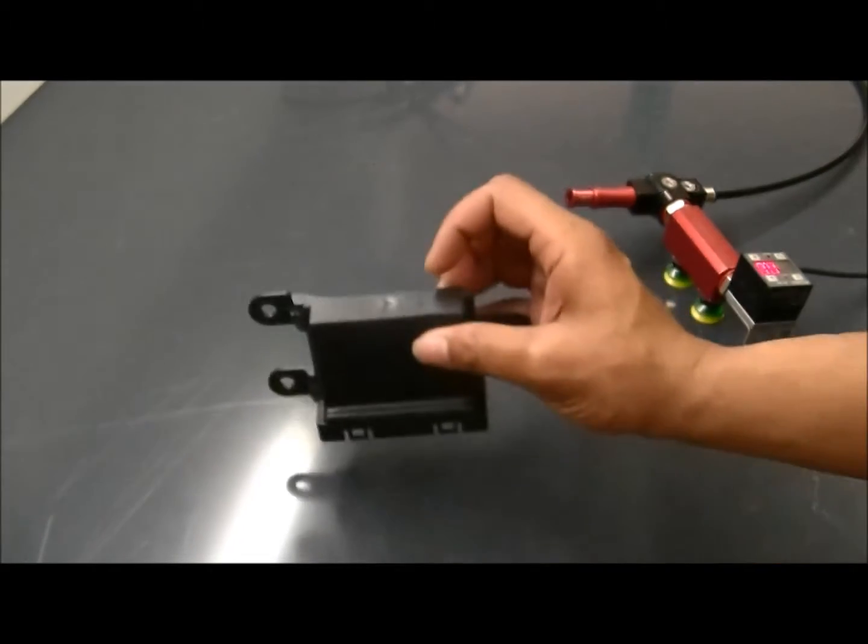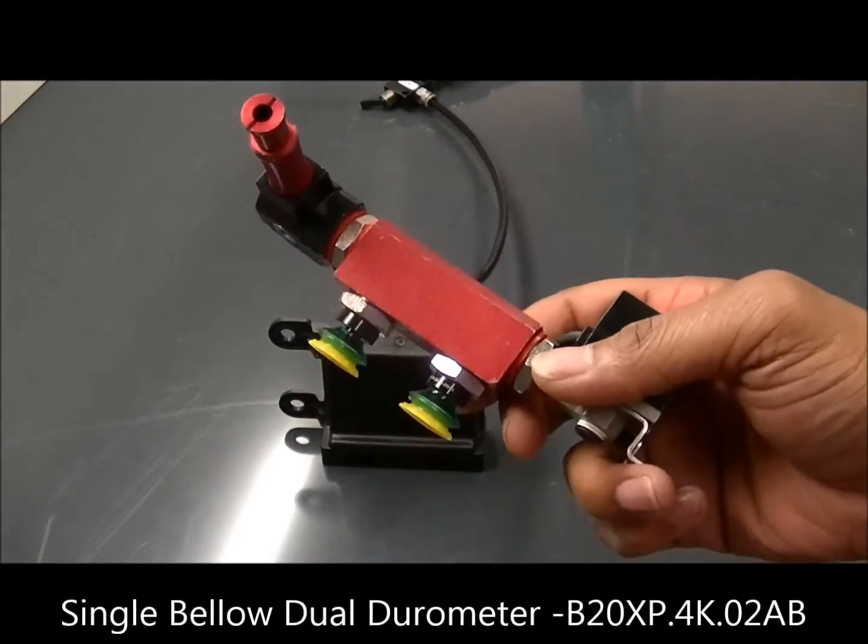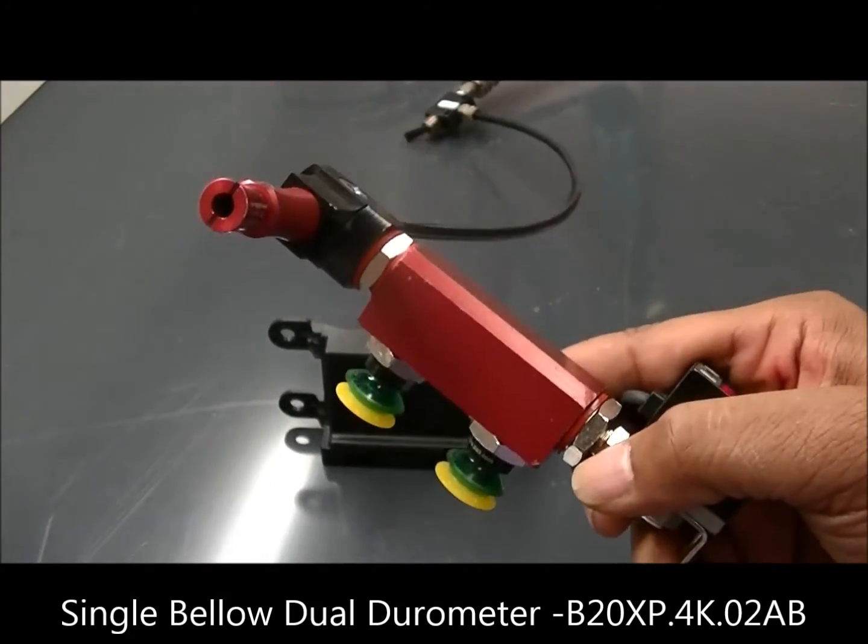As you can see, there are some forming marks. What we're going to use for this test is a single Bello Dual Durometer Duraflex Cup.